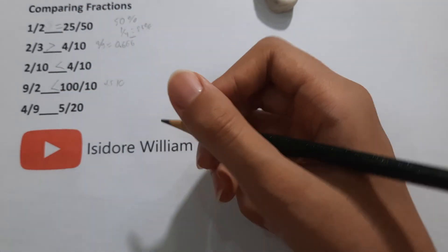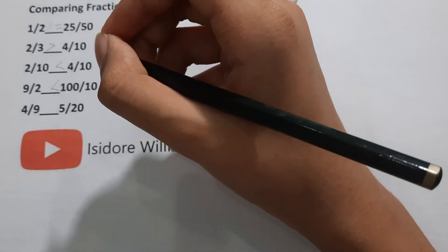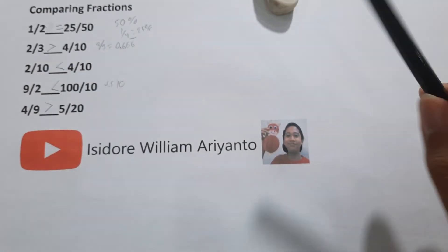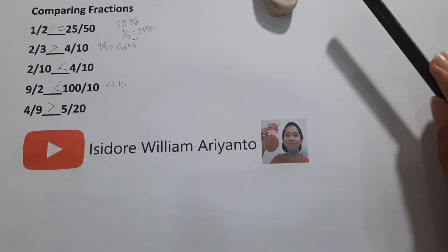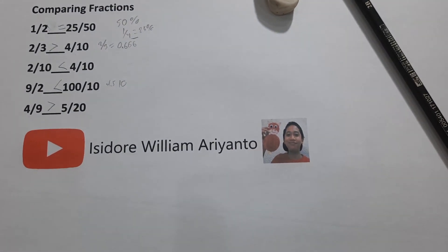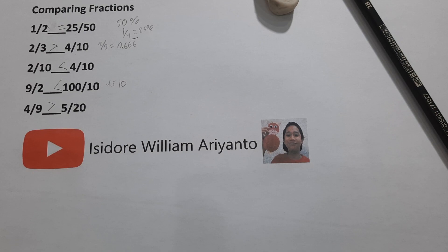4 divided by 9. 5 divided by 2. Of course — smaller denominator. So yeah, that's it. Thank you for watching and goodbye.